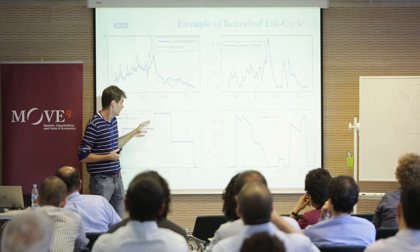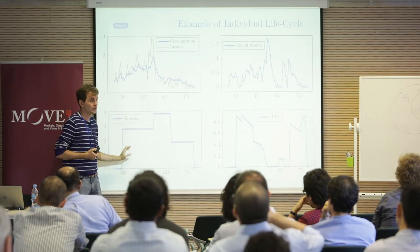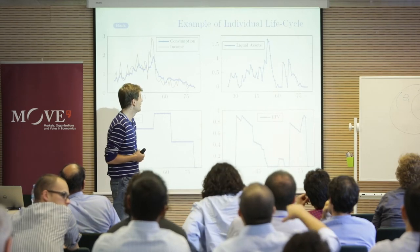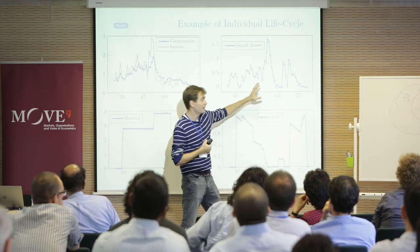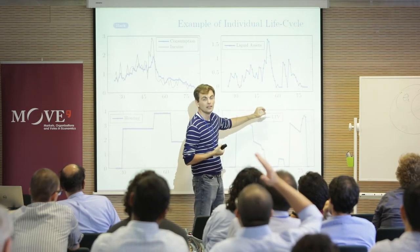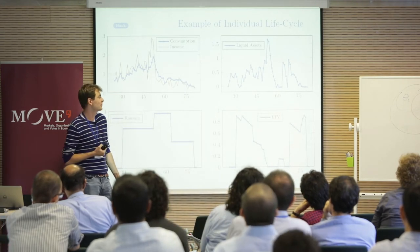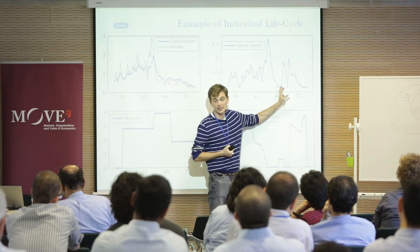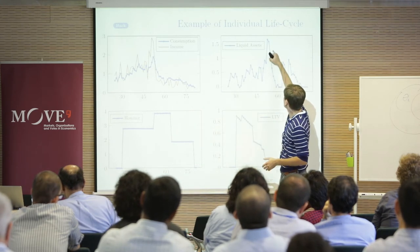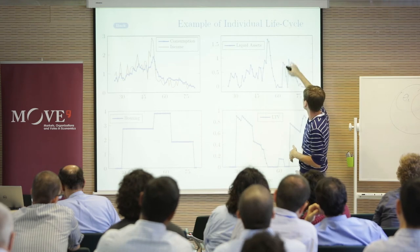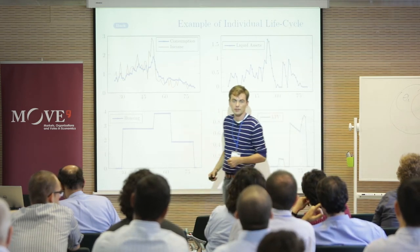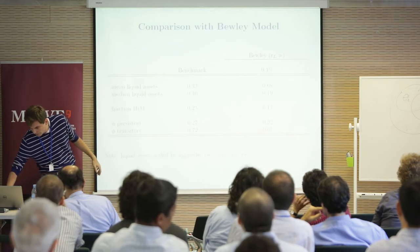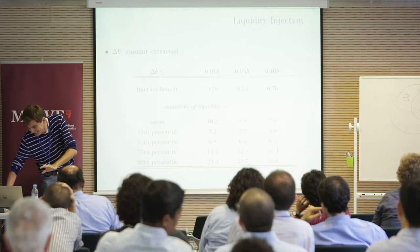In terms of housing, people can own and rent, and the house size H enters preferences. This illustrates how the life cycle looks for a particular household simulation: income fluctuates, consumption smooths, and housing decisions show lumpy adjustment. We can't fully address the comment that in the data homeownership is roughly flat over the life cycle, though we do get increasing homeownership in early ages.